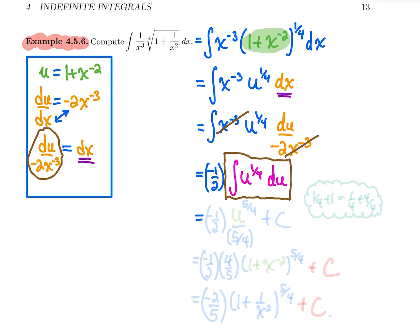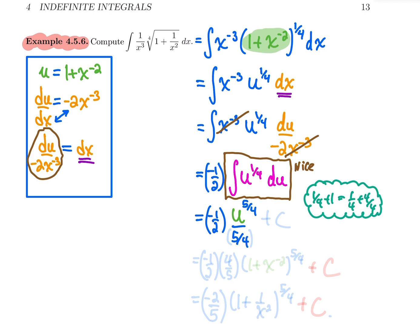Applying the power formula: we get minus one half times u to the power one fourth plus one, which is u to the power five over four. Remember, one over four plus one is one over four plus four over four, which equals five over four. If you need to do that computation on the side or with a calculator, that's fine. So the result is that power over the same power, plus c.